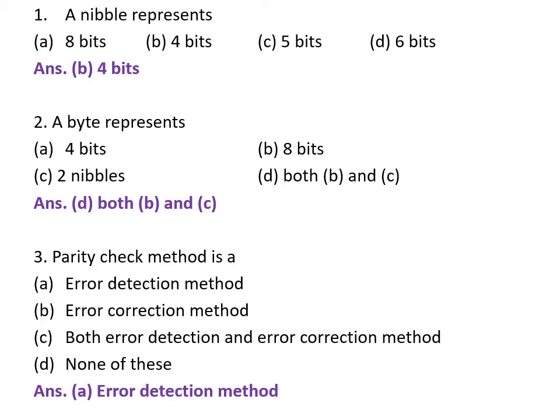Third question is: Parity check method is A. Error detection method, B. Error correction method, C. Both error detection and error correction method, D. None of these. And the correct answer is A, Error detection method.